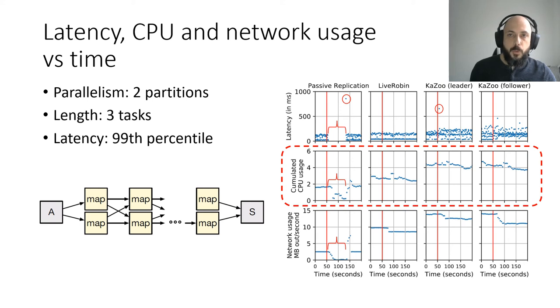Kazoo needs much more processing as it uses additional modules. The network usage is multiplied by 4 between LiveRobin and passive replication. This is also caused by the doubling of task managers. Kazoo has the Kafka and Zookeeper additional data transmission and has a higher network consumption.